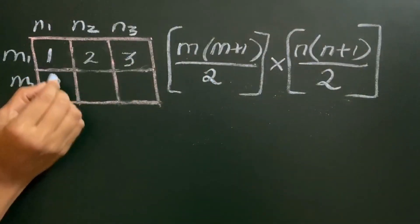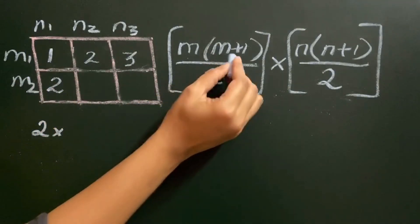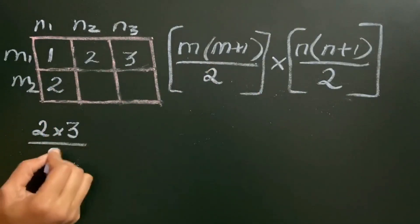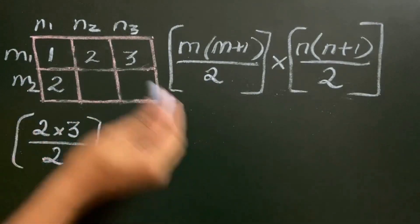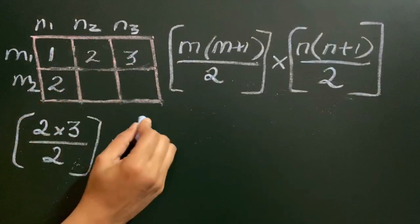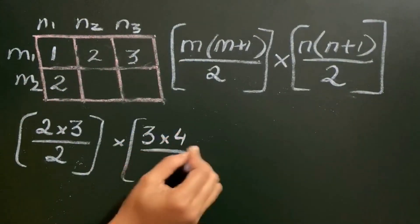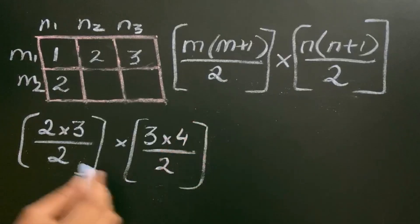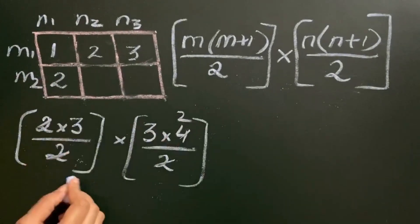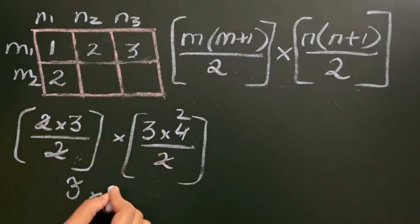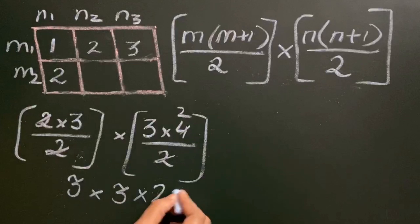Here m is 2 rows, so 2 into (2+1) which is 3. The column n is 3, so n+1 is 4. So we get 3 into 3 into 2, which is 18.